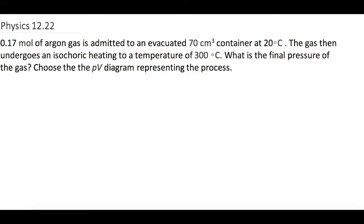0.17 moles of argon gas is admitted to an evacuated 70 cubic centimeter container at 20 degrees Celsius. The gas then undergoes an isochoric heating to a temperature of 300 degrees Celsius. What is the final pressure of the gas? And then part B says choose the pressure versus volume diagram representing the process.